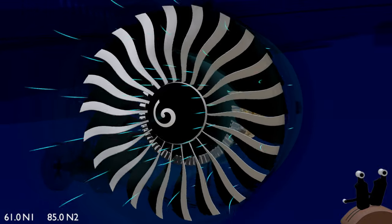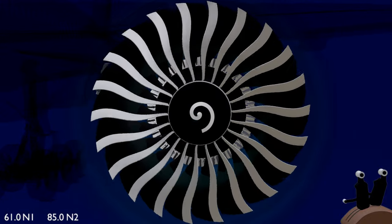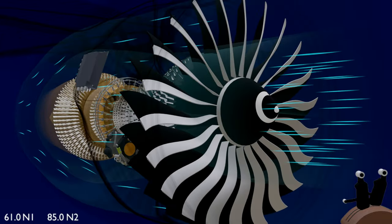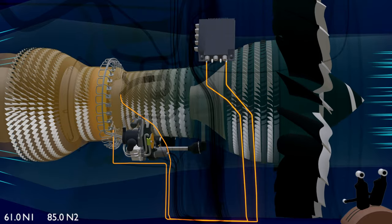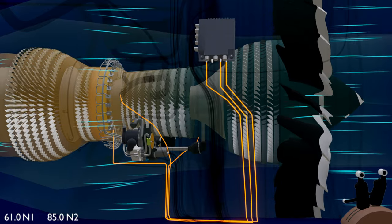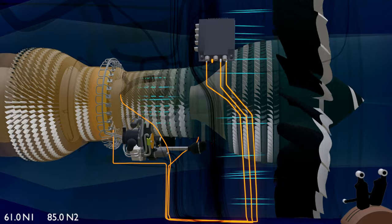In addition to temperature, the EEC also calculates pressure with the help of four pneumatic ports: the HP bleed duct pressure, combustion inlet pressure, LPC exit pressure, and the ambient pressure surrounding the engine.